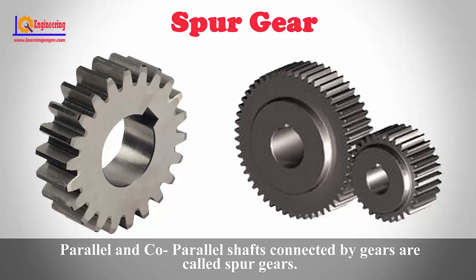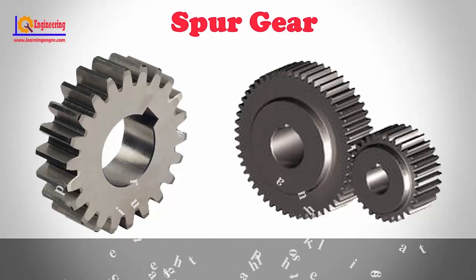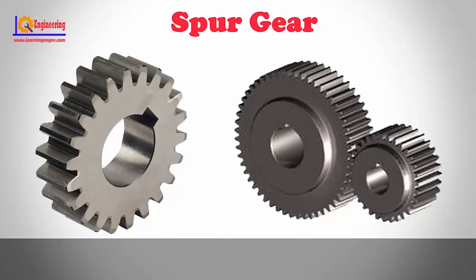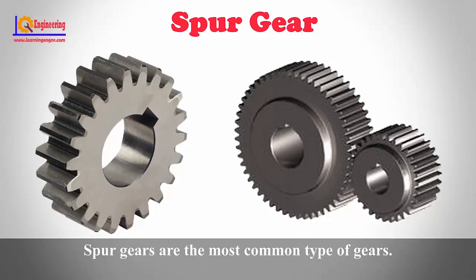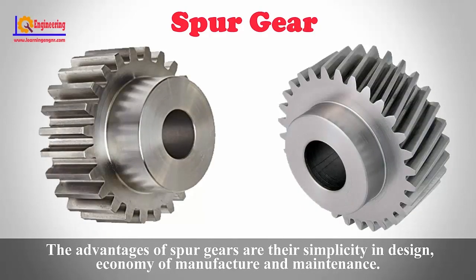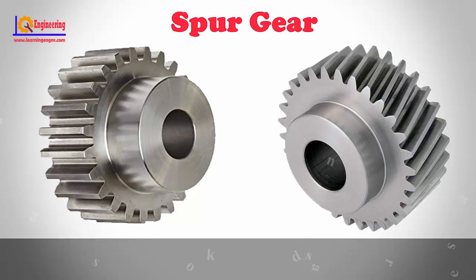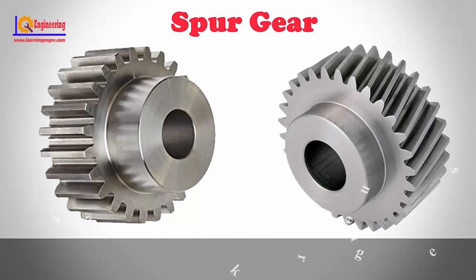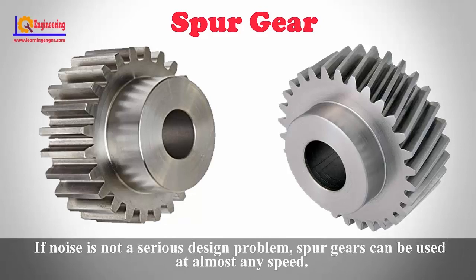Parallel and co-parallel shafts connected by gears are called spur gears. Spur gears have straight teeth and are parallel to the axis of the wheel. Spur gears are the most common type of gears. The advantages of spur gears are their simplicity in design, economy of manufacture and maintenance. Spur gears are known as slow speed gears. If noise is not a serious design problem, spur gears can be used at almost any speed.